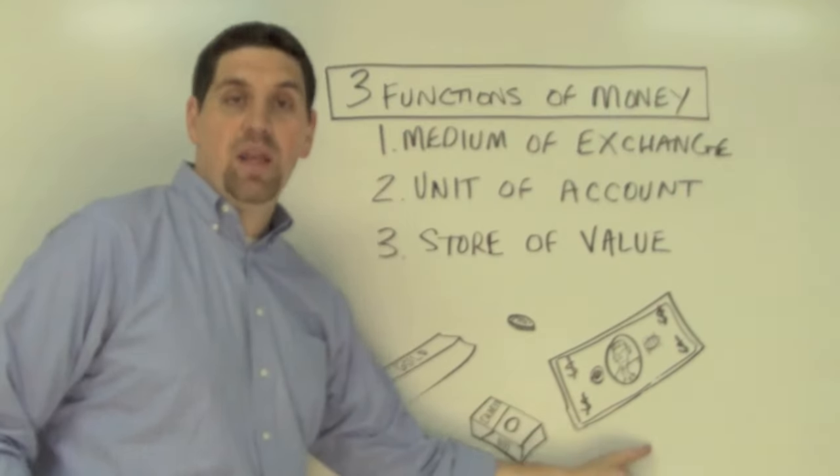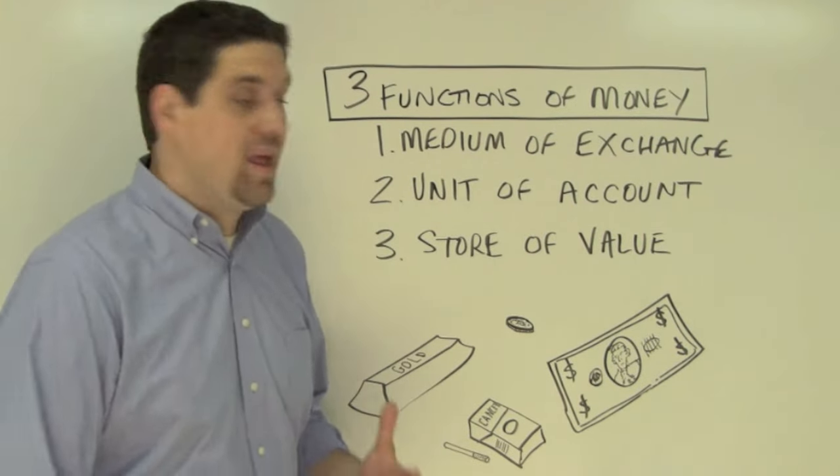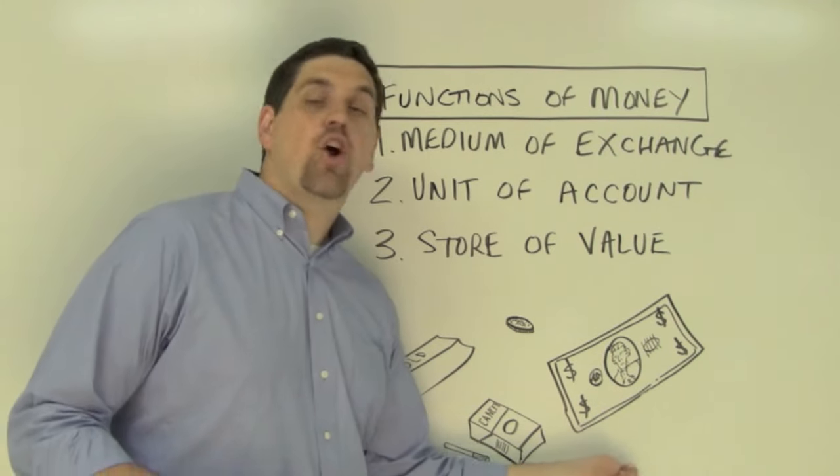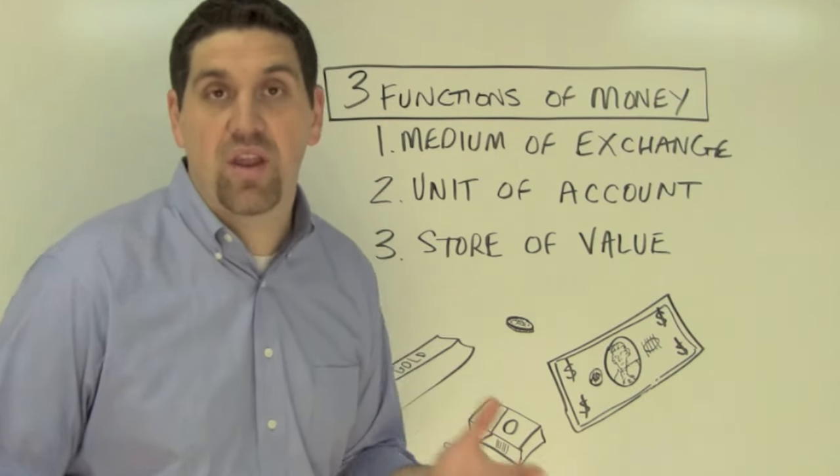It's the difference between fiat money and commodity money. Commodity money, like gold and cigarettes, has some sort of intrinsic value. You can do something else with it. Fiat money, like currency, has no other value. You can't do anything else with it.